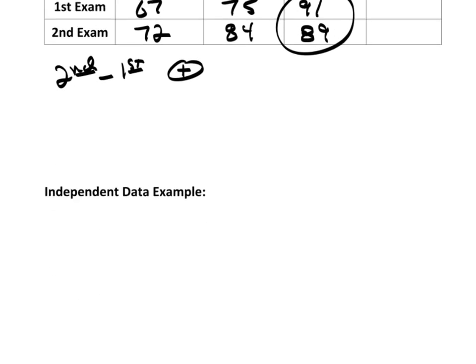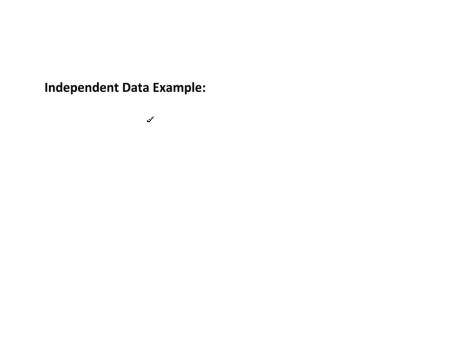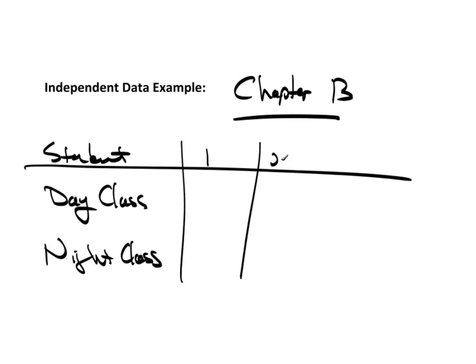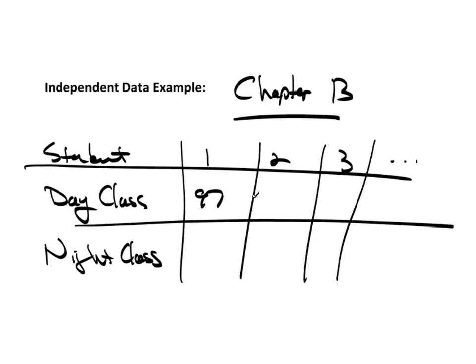Now, what about independent data? Well, let's suppose we had a chapter exam, say chapter 13 or something. And what I did is I took a look at my day class and my night class. So, maybe I had student number one, number two, number three, and so forth. And the day class was maybe a 97, an 82, an 88, whatever.